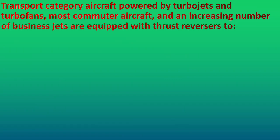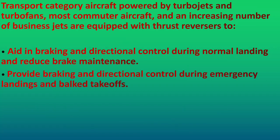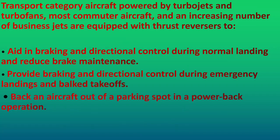Transport category aircraft powered by turbojets and turbofans, most commuter aircraft, and an increasing number of business jets are equipped with thrust reversers to aid in braking and directional control during normal landing, reduce brake maintenance, provide braking and directional control during emergency landings and aborted takeoffs, and to back an aircraft out of a parking spot in a power-back operation. Some thrust reversers are electrically powered, though most large transport category aircraft use hydraulic or pneumatic actuators. Thrust reversers provide approximately 20% of the braking force under normal conditions but must be capable of providing 50% of rated thrust in the reverse direction.